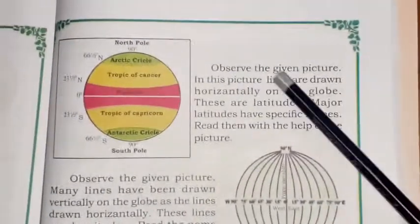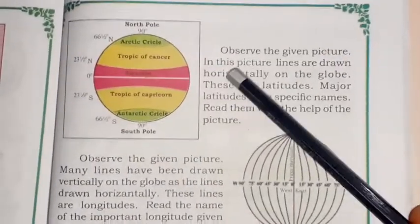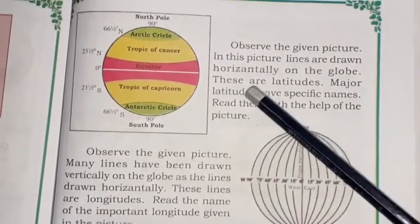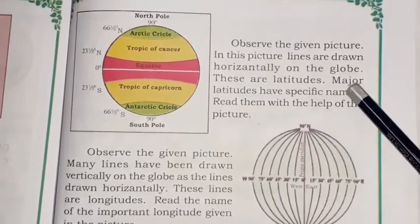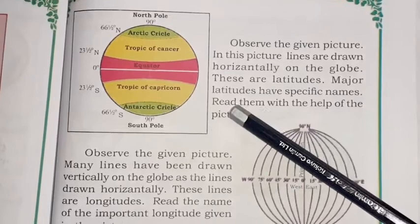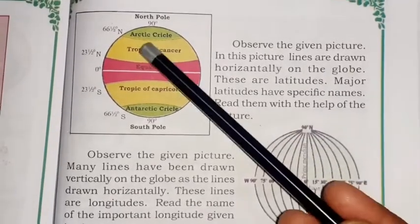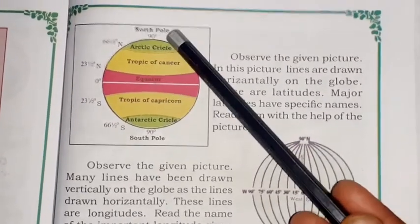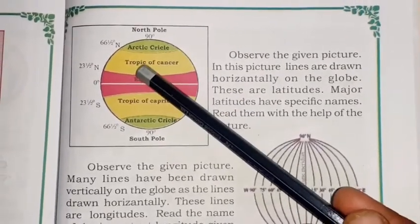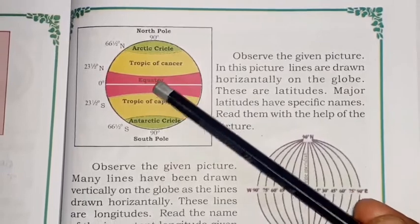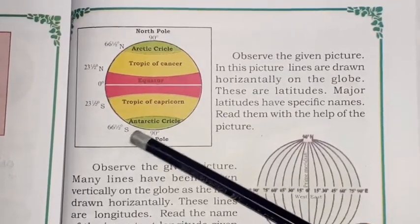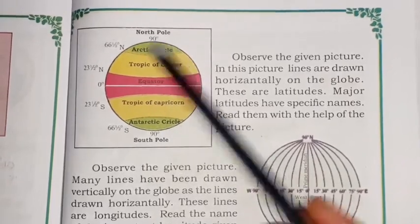Observe the given picture. Lines drawn horizontally on the globe are called latitudes. Major latitudes have specific names — read them with the help of the picture. These are: North Pole, South Pole, Arctic Circle, Tropic of Cancer, the Equator (the middle line), Tropic of Capricorn, and Antarctic Circle.